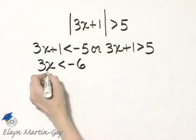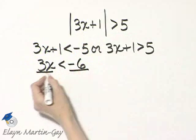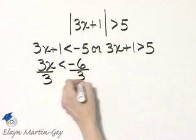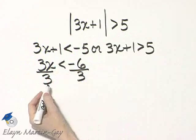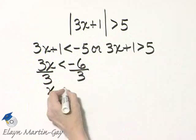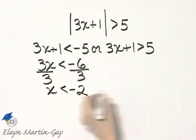Then how do I finish solving? I'll divide both sides by the coefficient of x, which is 3. I'm dividing by a positive number so I don't change the direction of the arrow or the inequality symbol. And I'll have x is less than negative 2.